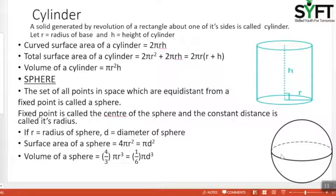Remember, 4πR² equals πD². D is the diameter, which is 2R. Volume of a sphere equals 4/3 πR³. You have to remember 4/3 πR³. In terms of diameter, we can write 1/6 πD³, where D is the diameter.